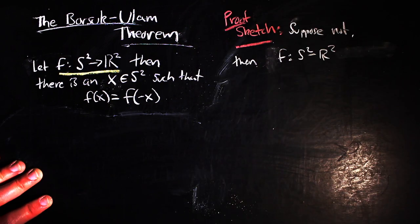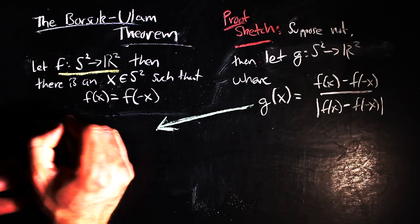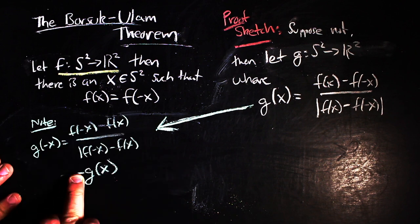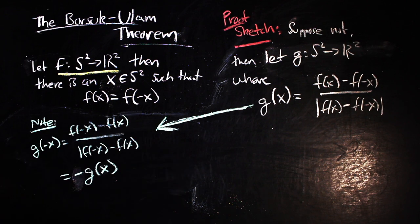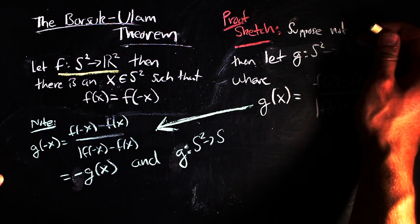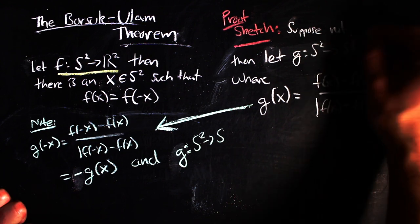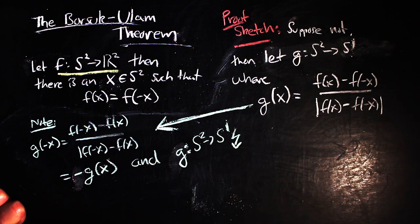We just suppose there isn't one. Then we can define a map like this one. But since f of x is not equal to f of negative x, it is continuous and we can check that it's antipode-preserving for all x on the sphere. But we know this can't happen. So this is a contradiction.